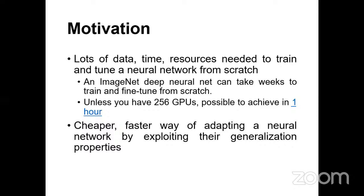Transfer learning — the name itself says we would like to transfer knowledge gained in domain X to another application called Y. This is also called domain adaptation. Generally you might have heard about one of the biggest datasets called ImageNet. To train any model on it, you need a huge number of GPUs — minimum 256 GPUs are required — but we don't have that much infrastructure, so using transfer learning makes it cheaper and faster.